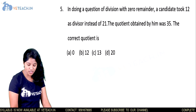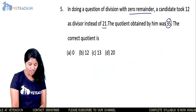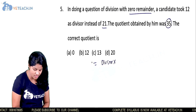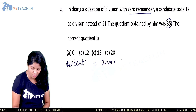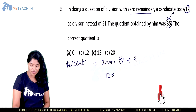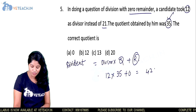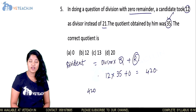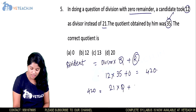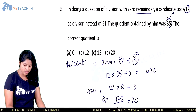Next question: in a division with zero remainder, a candidate took 12 as divisor instead of 21 and obtained quotient 35. The correct quotient is? Since remainder is 0, the dividend equals 12 times 35 equals 420. Using the correct divisor 21, the correct quotient is 420 divided by 21 equals 20. So option D is our correct answer.